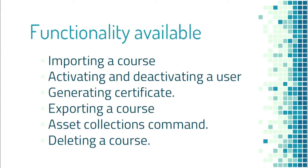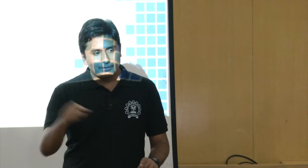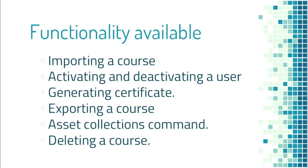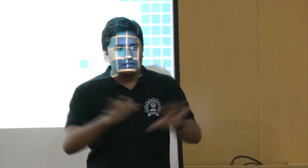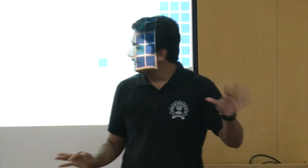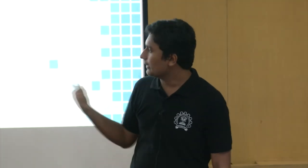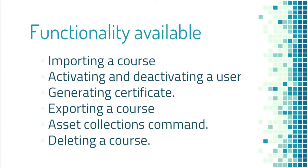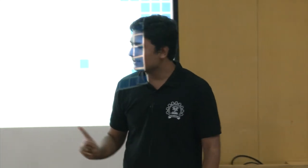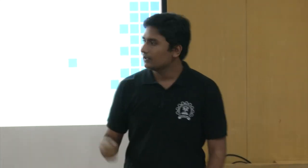Generating a certificate can be done in two ways: for a particular user enrolled in a single course, or for all users in a course at once. There is also a feature for exporting a course to GitHub. Another feature is running the asset collections command — essentially compiling all individual files on the server, which is like refreshing the server and takes a lot of time. Finally, deleting a course: this feature is currently not available in the front end and can only be done by admin through terminal commands.